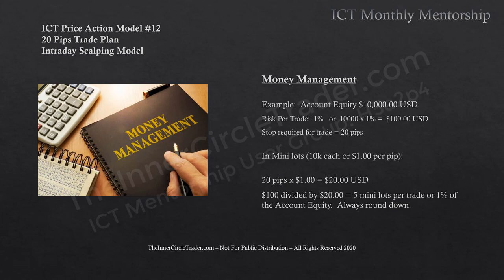Using mini lots (10K leverage = $1.00/pip): same $10,000 account, 1% risk = $100, 20-pip stop. 20 pips × $1.00 = $20.00. $100 ÷ $20.00 = 5 mini lots per trade, or 1% of account equity. Always round down.